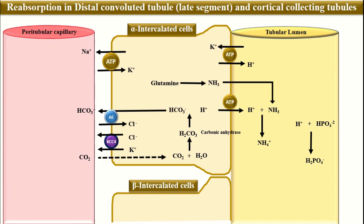Now let's discuss the beta intercalated cells. The beta intercalated cells have a very important protein transporter on the apical membrane called pendrin. This is an anion exchanger that leads to the secretion of bicarbonate ions into the tubular lumen in exchange for a chloride ion. The same protein transporters are also located in the ear and the thyroid gland. Mutations in the pendrin protein can lead to development of a syndrome called Pendred syndrome. The lack of pendrin can lead to deficient bicarbonate secretion into the tubular lumen and can lead to the development of metabolic alkalosis.